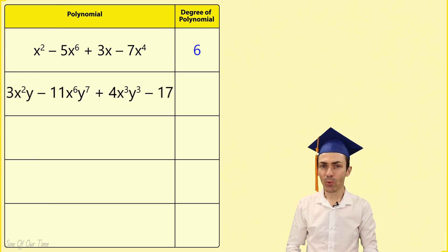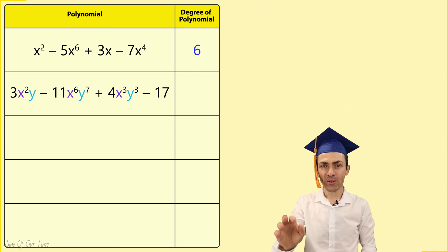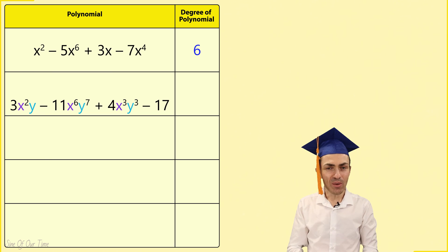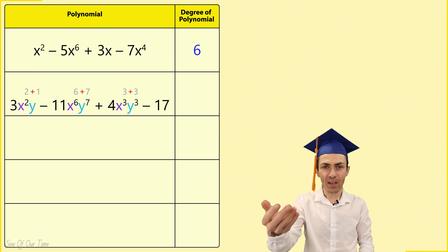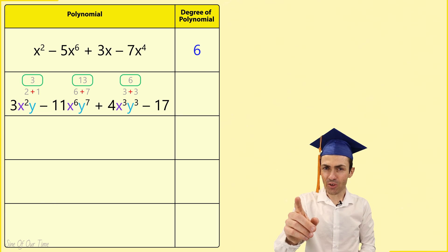In this next example we have two different variables, x and y. But not to worry though, to get the degree of each term we simply add the exponents of x and y. Remember that a constant term has a degree of zero.